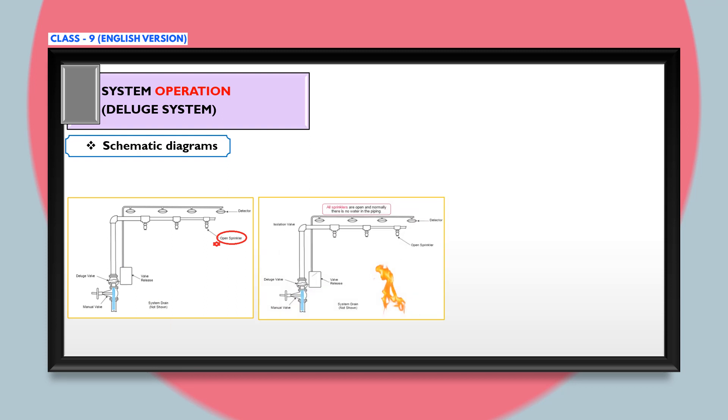When fire occurs, a supplemental detection system or the detection devices sense the fire and automatically open the deluge valve. When the deluge valve opens, water flows into the piping and out through all the open sprinklers or nozzles simultaneously.